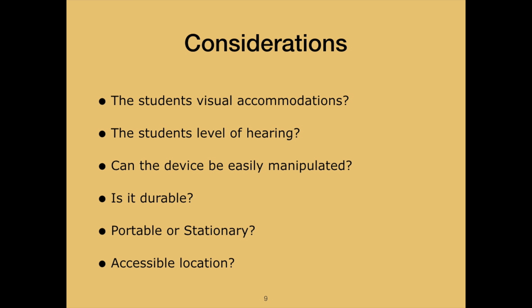There are several options on the design of the object calendar system to use with your student, but the big picture to keep in mind is the system needs to take into account the student's sensory needs — how much can the child see or hear? If the student is getting services from a teacher of students with visual impairments and/or an educator for the deaf, you might want to consult their expertise. Also, you might want to consider the student's physical needs. Does a student use a wheelchair or a walker? The timepiece will need to be created in a way that provides your student the best opportunity to easily access and manipulate the system. You may want to consult with the child's occupational therapist or physical therapist.